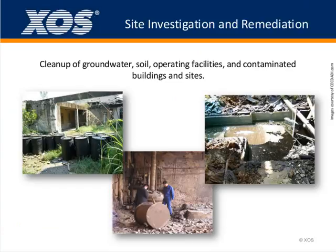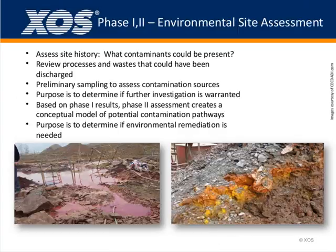Now I will introduce site investigation and remediation. Many fields are seriously polluted — according to groundwater, soil operating facilities, contaminated buildings and sites. There are several steps for environmental site assessment and remediation. For the first one or two phases, called environmental site assessment, people need to assess the history of the site and whether there will be possible contaminants. If there might be danger, they will use a machine to check samples there and judge if remediation is needed.